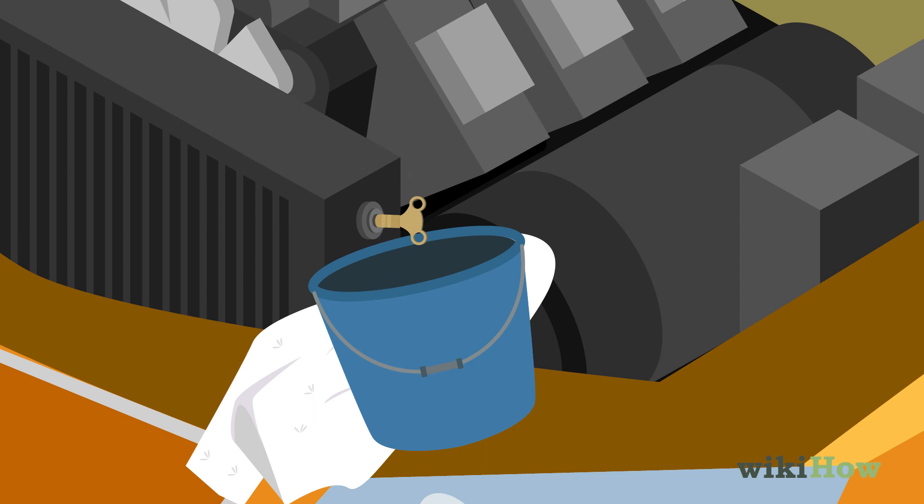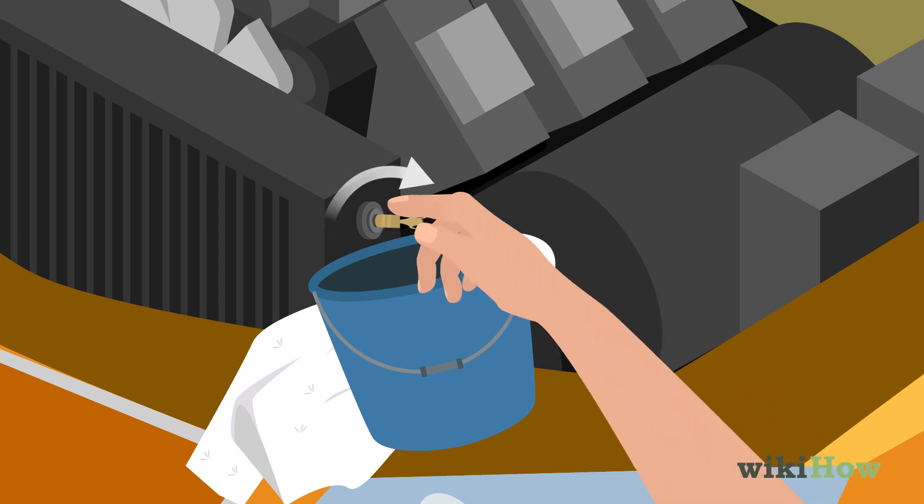Once the air is gone, turn the radiator key clockwise to close the bleed valve. Continue turning the key until it won't tighten any further to shut the valve and finish bleeding the radiator.